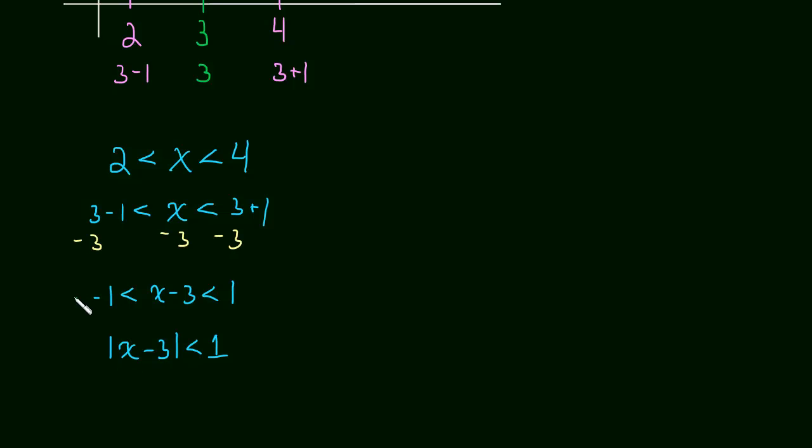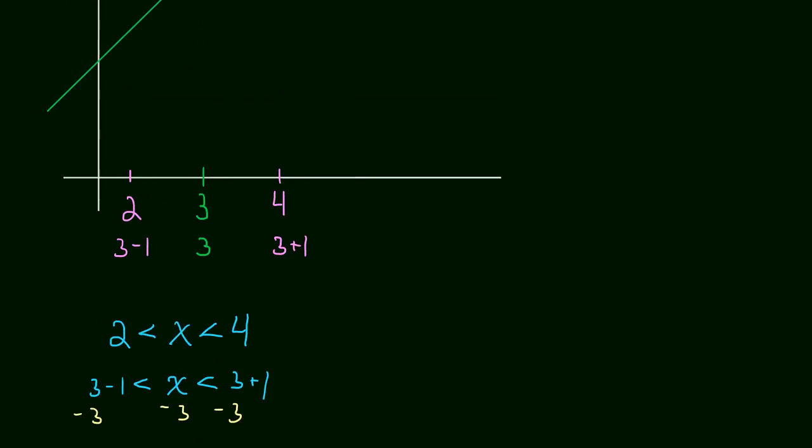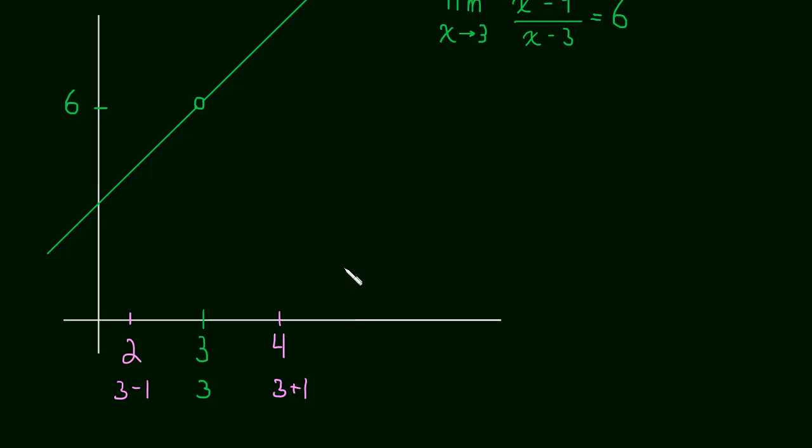So just try values if you don't believe me. You should have learned somewhere along the line that these two things are equivalent. So that means that we have a really nice way to kind of wrap up this statement that we want x to be within 1 unit of 3. So what we said was we have the absolute value of x minus 3 is less than 1. And that means that x is within 1 unit of 3.